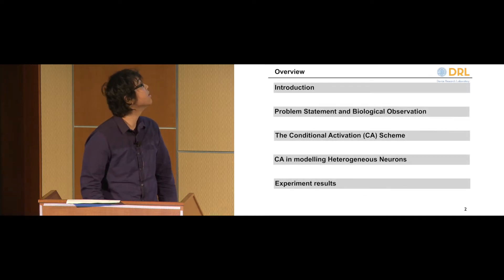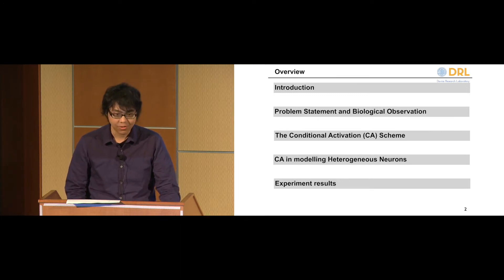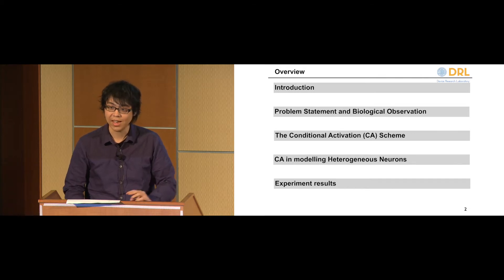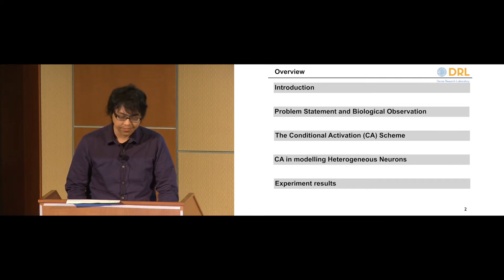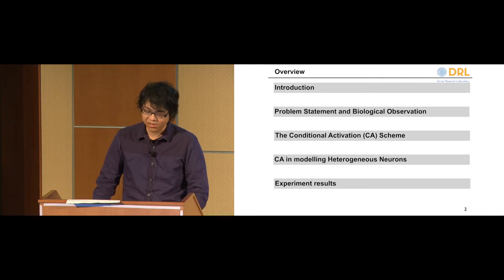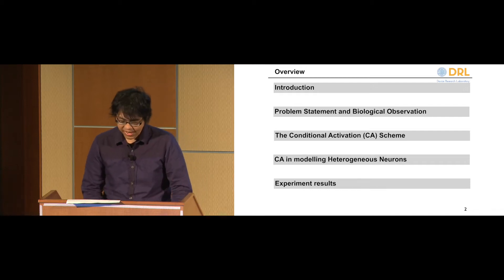A brief outline of this talk: first I will go through the present day description of neuromorphic computing and what we see that agrees with the biological nervous system. Based on these observations, we will propose a method for modeling this diverse neural activity and use it to model certain special neural behavior. With these models, we then do some initial experiments and show that it can improve upon the conventional.